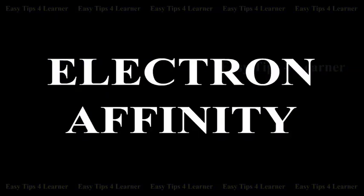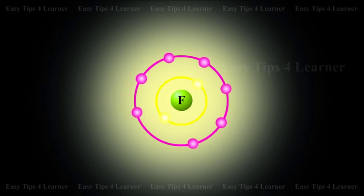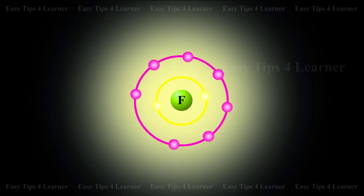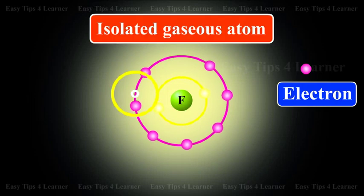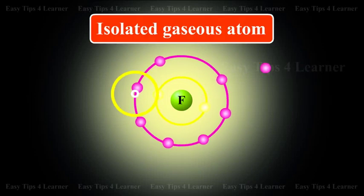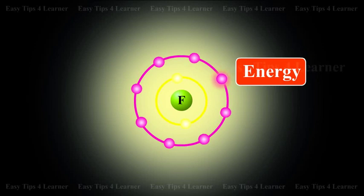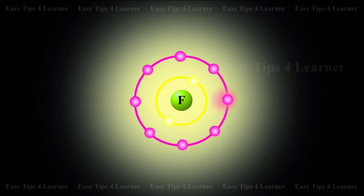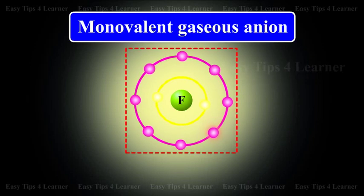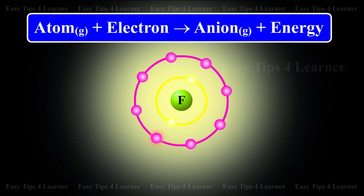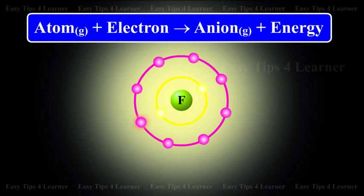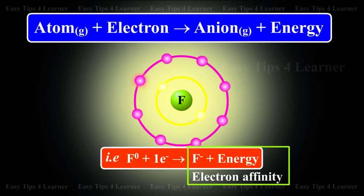Electron affinity, or electron gain enthalpy, is the amount of energy released when an isolated gaseous atom accepts an electron to form a monovalent gaseous anion. Atom plus electron gives anion plus energy.